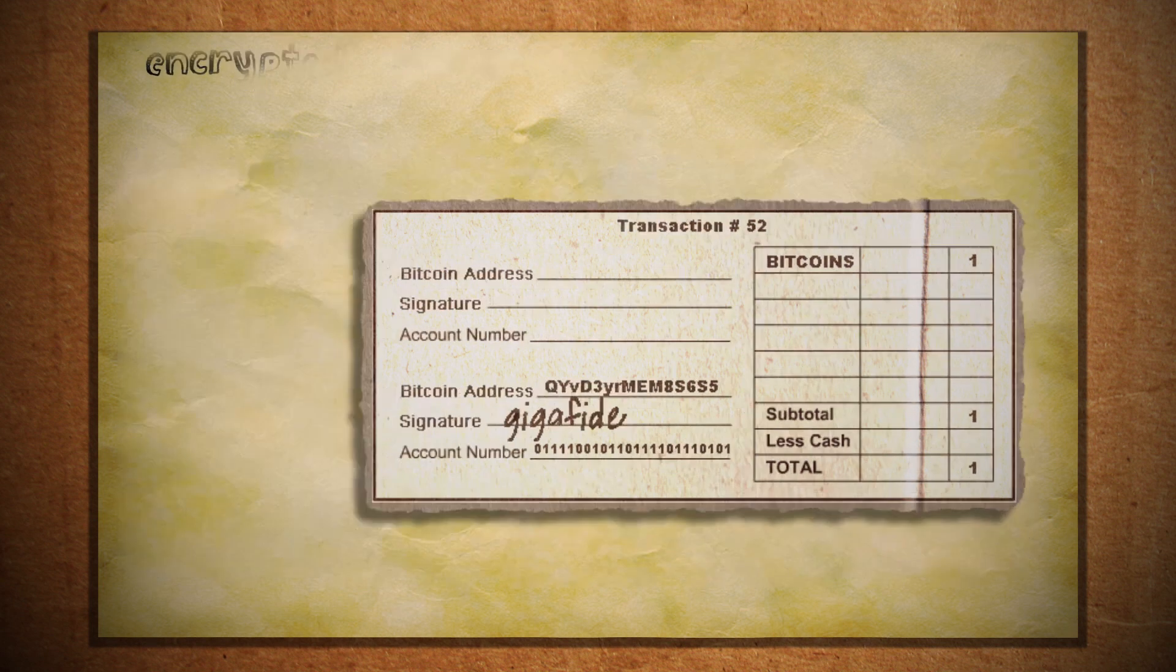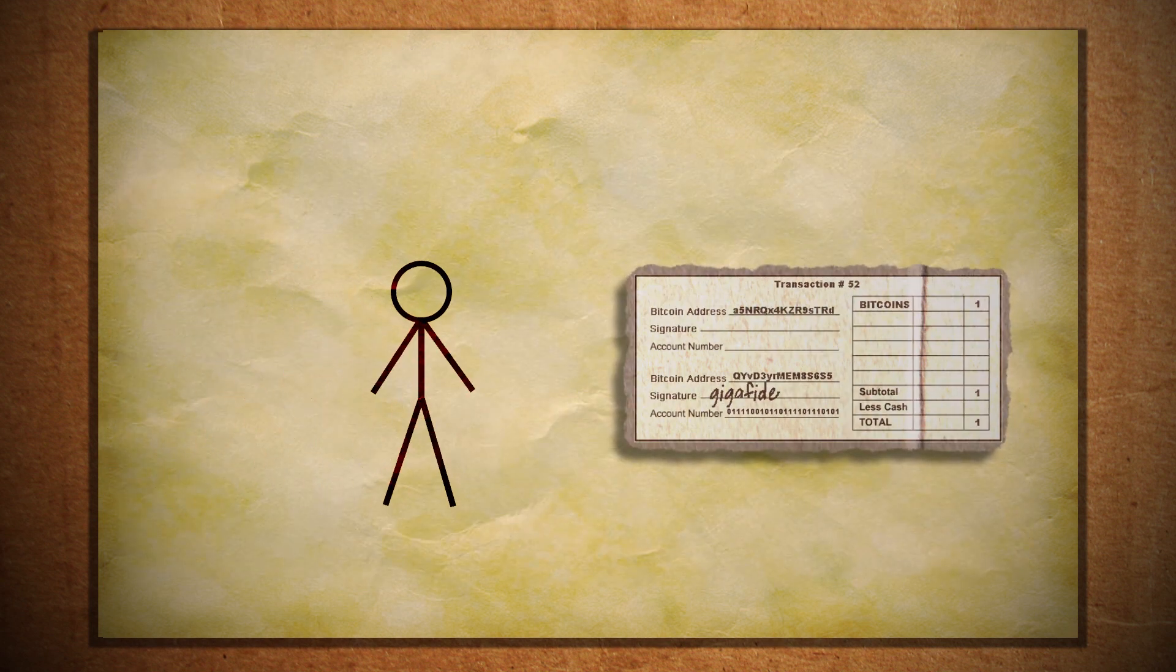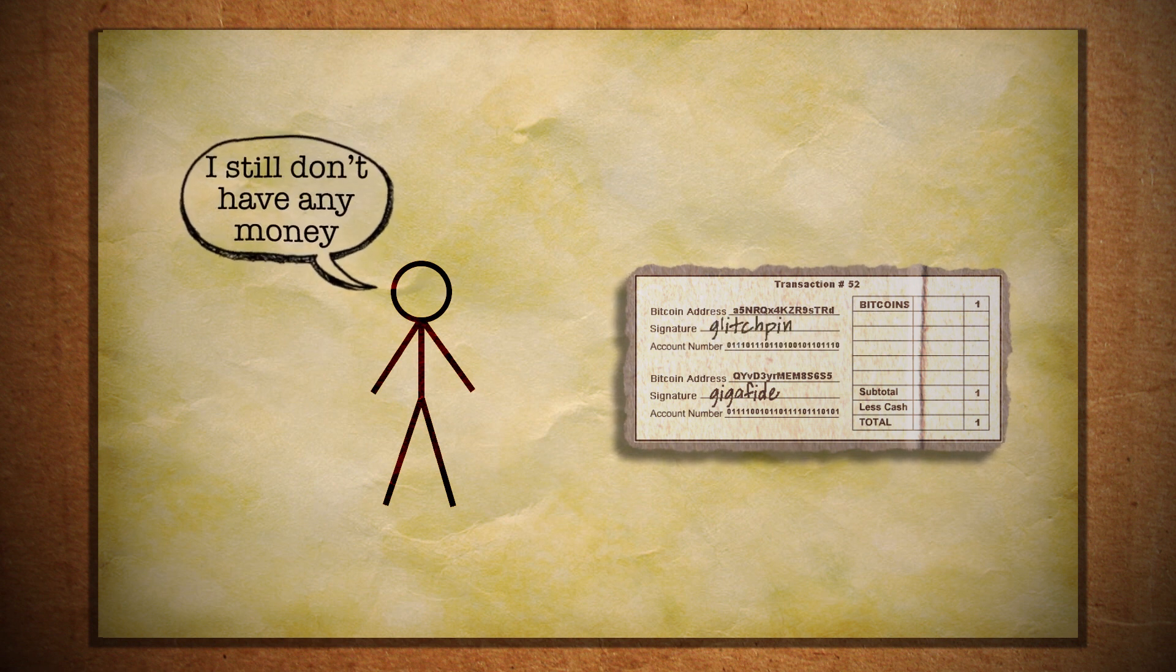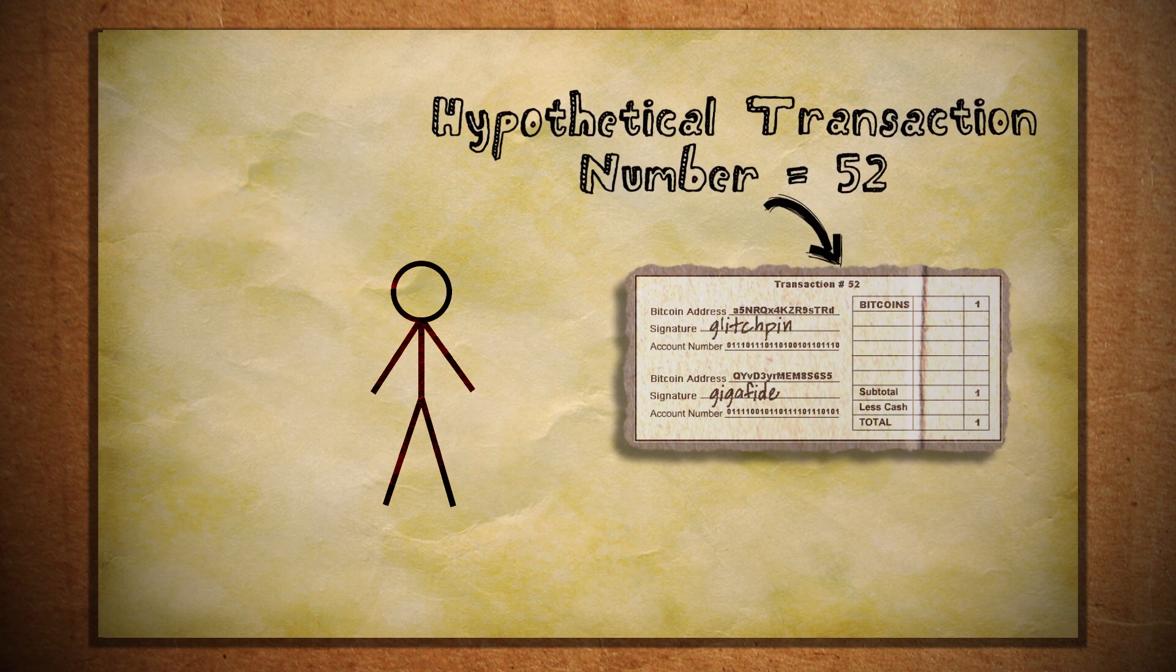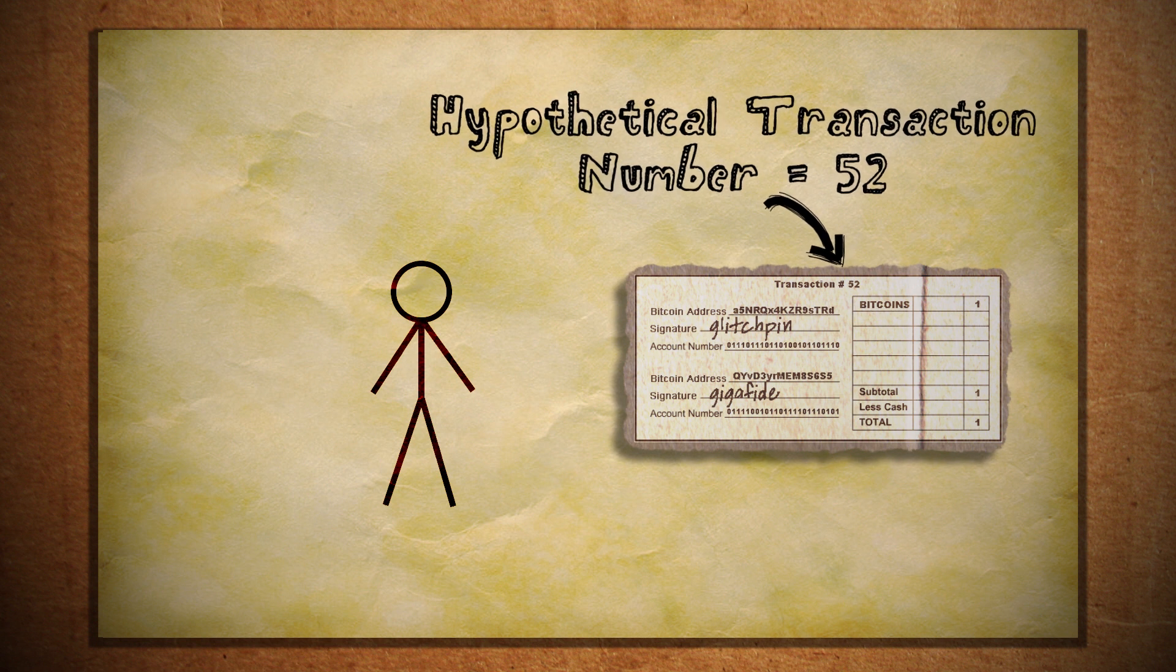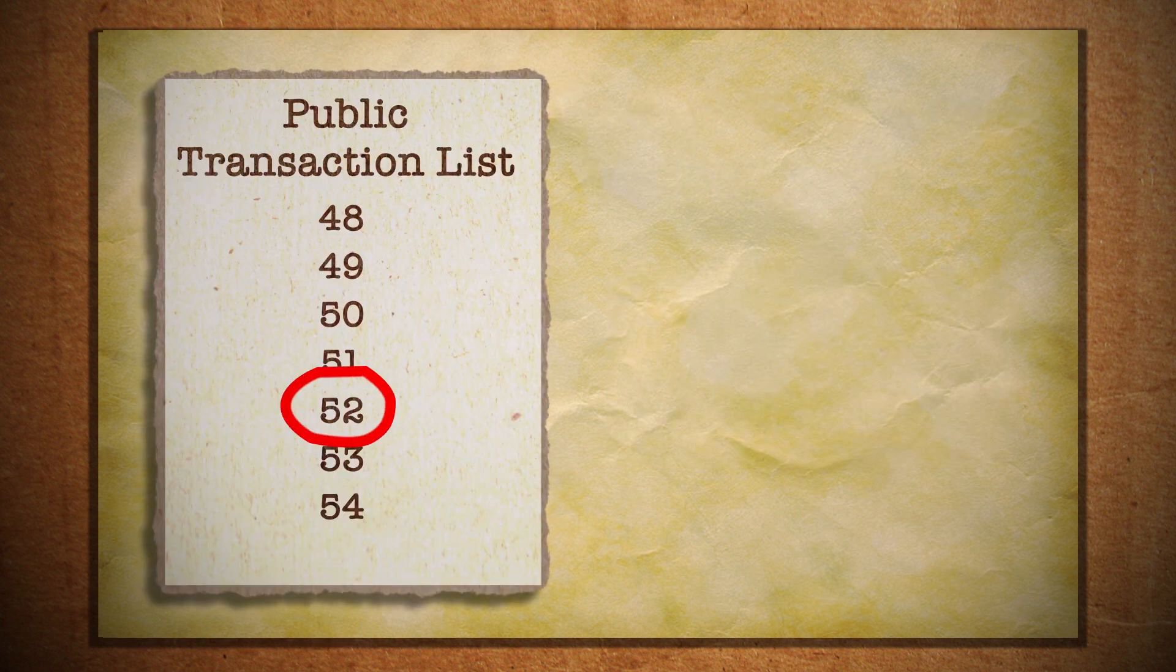These verify your account and also serve as your digital signature. We then send this over to glitch pin who in turn signs, verifies, and encrypts it with his wallet. So this number represents the entire transaction and this gets stored publicly so that the Bitcoin community can verify it.